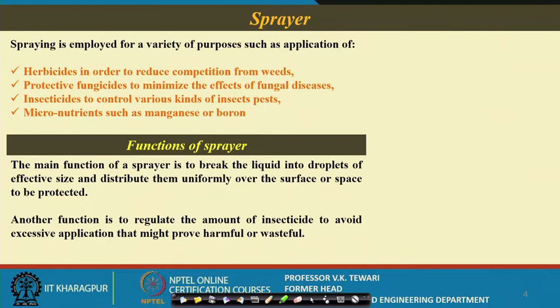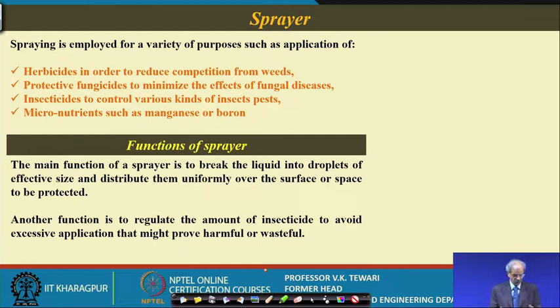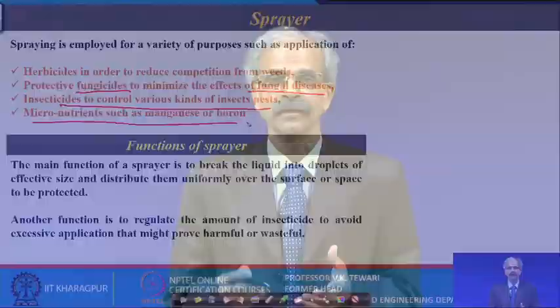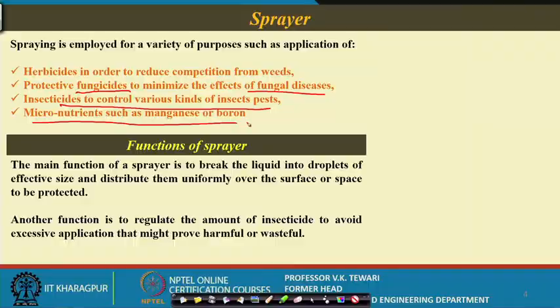The ways in which sprayers are used include: herbicides, in order to reduce competition from weeds; fungicides for protection of the crop from fungal diseases; control of insects and pests, which is of concern to us in this particular lecture; and micronutrients, because sometimes we would like to apply certain nutrients or growth-enhancing materials — hormones — in which case also you can use this sprayer.